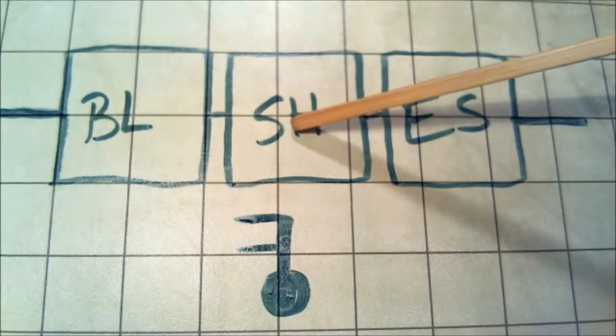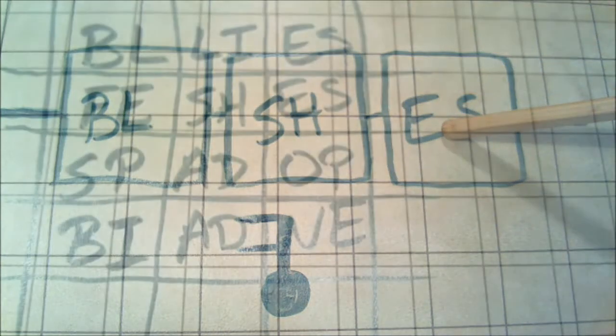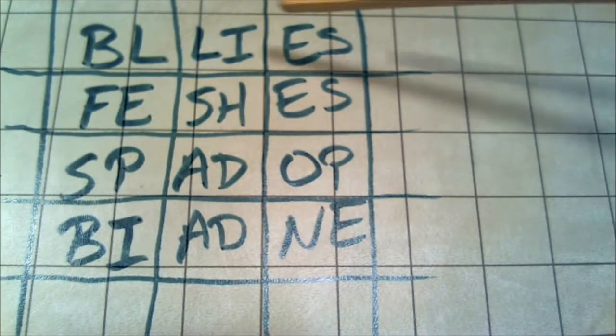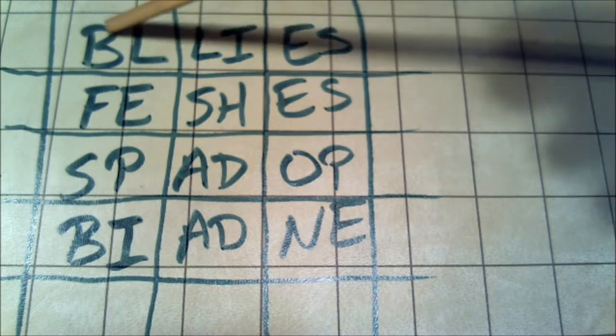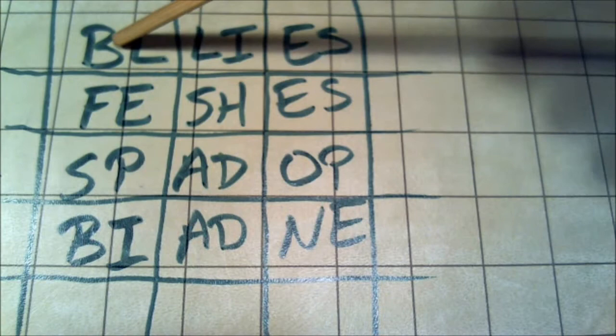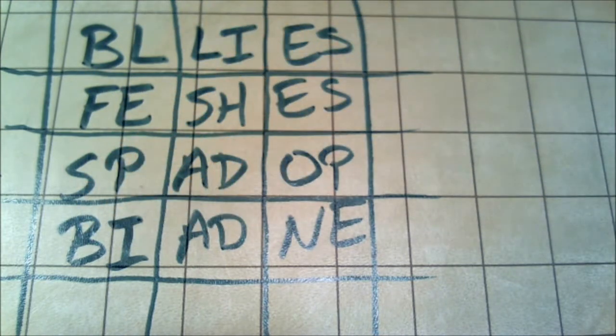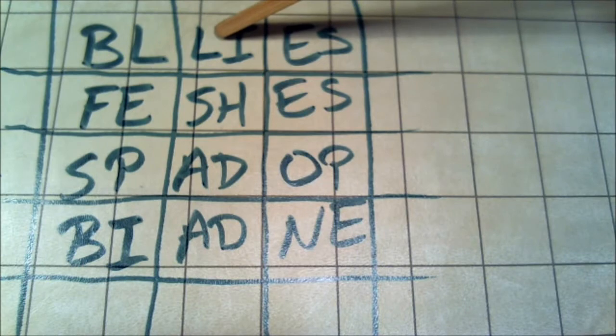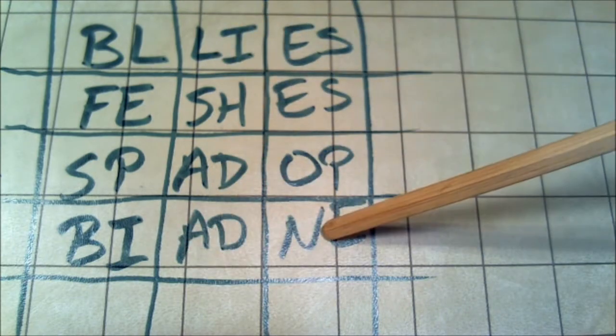So let's take a look a little bit closer at what all of these letters are. Okay so here is the contents of our blocks. Again we have three cubes and you can rotate the first cube and get one of these four pairings. So you get BL, FE, SP, or BI and then the second cube can be rotated to line up with the first one with this group of letters and the third cube with this group of letters.